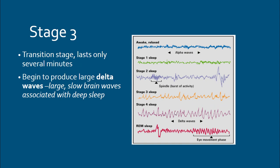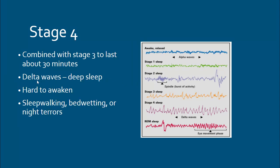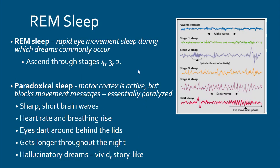Stage three is brief — just a few minutes — acting as a transition between stage two and four. We begin producing delta waves: large, slow brain waves associated with deep sleep. Stage four is where the most important work happens for memory formation and physical recovery. If you're not getting enough stage three and four sleep, you'll feel more tired and your muscles won't recover well. Sleepwalking, bedwetting, and night terrors all occur during stage four — the deepest sleep — not during dreaming.